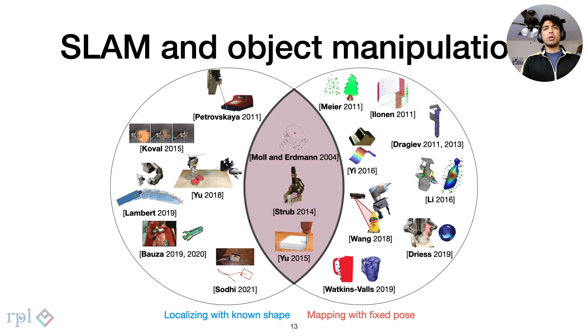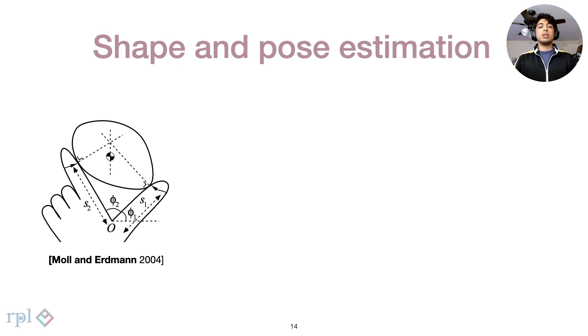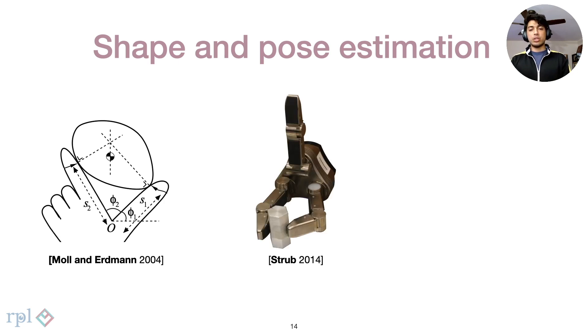Finally, we look at some work down the middle. Moore and Erdmann considered the illustrative case of reconstructing motion and shape of a smooth convex object between planar forms. Straub and others demonstrated the full SLAM problem for a specific setup, a convex object rolled between dexterous fingers.